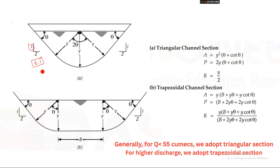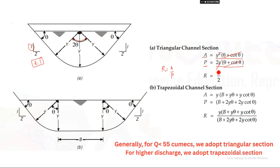For the triangular section, the side slope is Z:1, where if this angle is θ, the full angle at the bottom is 2θ. Calculating from geometry: Area A = y²(θ + cot θ), and wetted perimeter P = 2y(θ + cot θ). So hydraulic radius R = A/P = y/2 for a triangular section.